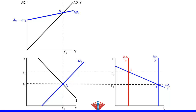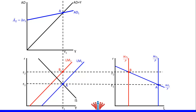Since money supply declined, this will shift the LM curve to the left in the IS-LM model. The LM curve will shift to the left crossing point R2 and Y1 — let's label that point B1. Then shift the LM curve to the left crossing point B1.